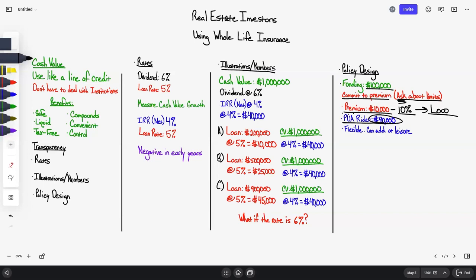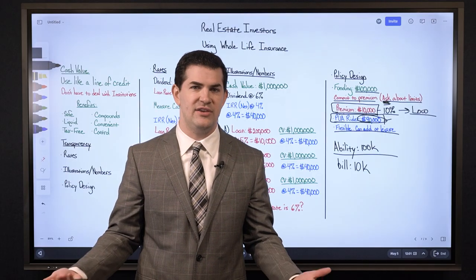The PUA rider can be flexible and added at your discretion, depending on the company. A lot of people commit to $10,000 in premium and then add an additional $90,000 at their discretion. So you have the ability to put up to $100,000 per year into the policy, but you're only billed for $10,000 — it doesn't feel like a burden. You then add additional funds to your PUA rider, which you immediately see show up in cash value, and you've got a policy you're satisfied with.